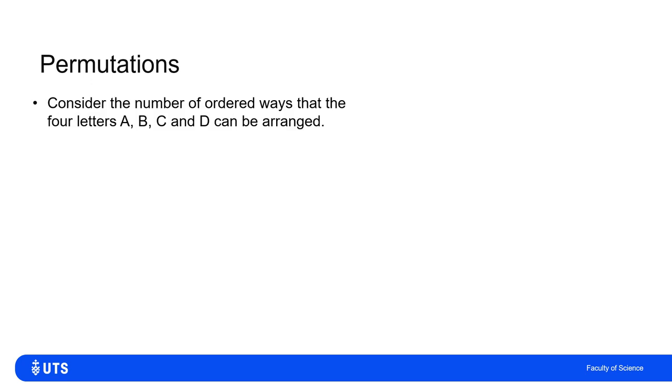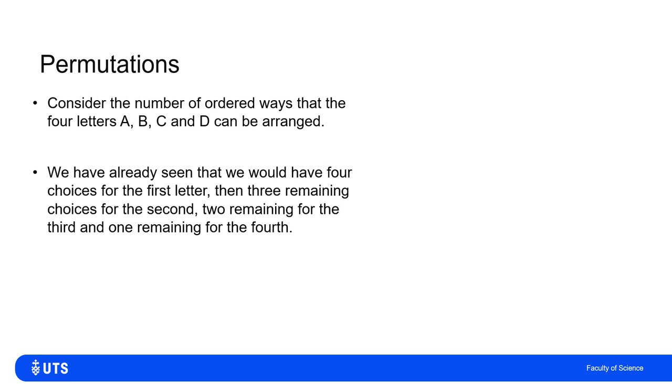If we want to consider the number of ways that four objects, four letters can be arranged—A, B, C, D—then we've already seen that if we think of this sequentially, I can choose any one of those four letters to be first. Once I've picked that one, then I have three remaining choices for second. Once I pick those two, two remaining, and then once I pick those three, just one remaining.